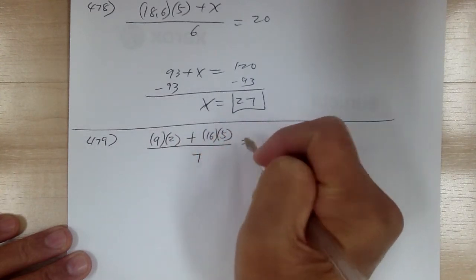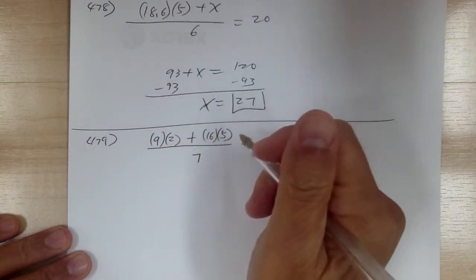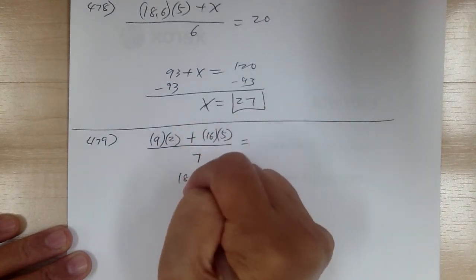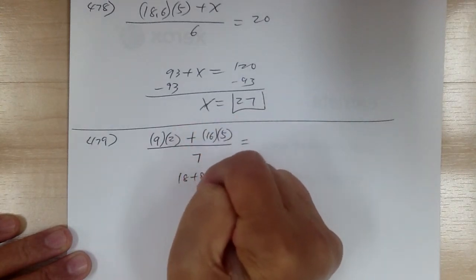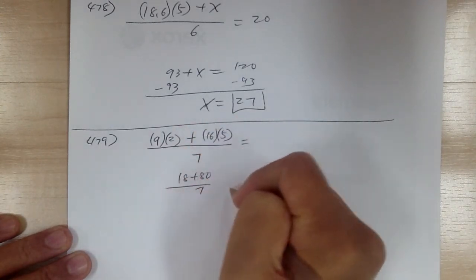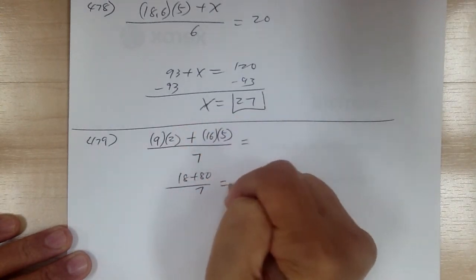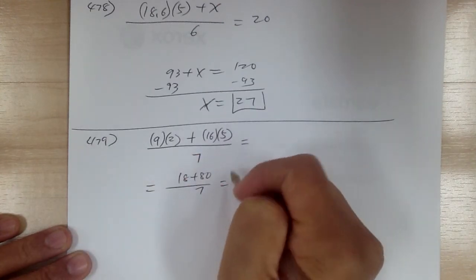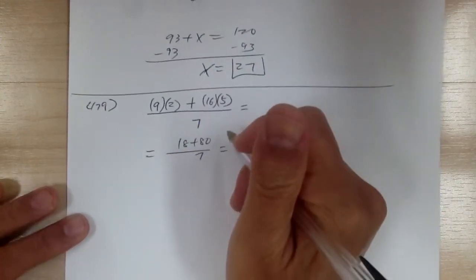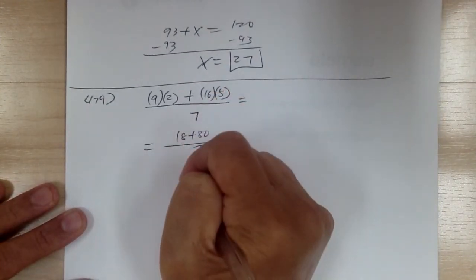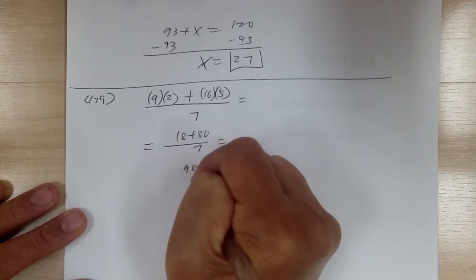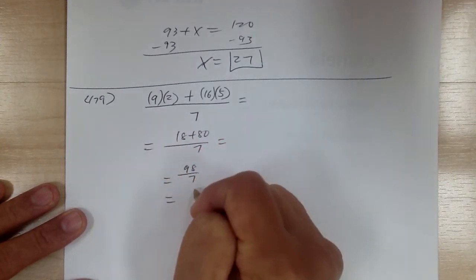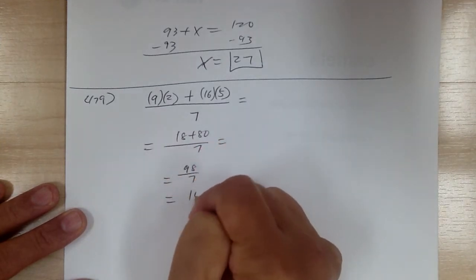So this would equal to — you can work it out — 18 plus 80 over 7. So this equals 98 over 7, which equals 14.